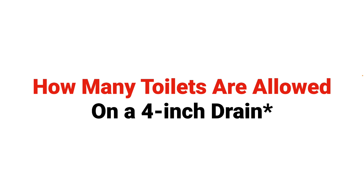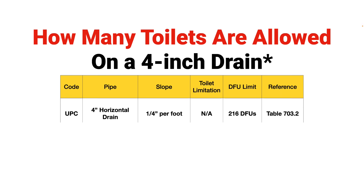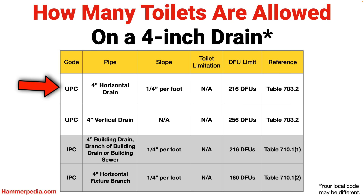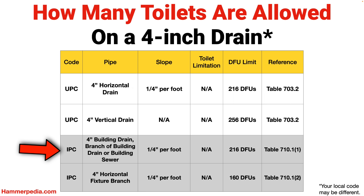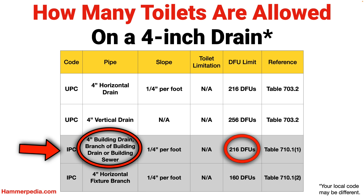What about four inches — how many toilets on a four inch drain? The UPC allows 216 DFUs on a four inch building drain sloped at a quarter inch per foot. The IPC also allows 216 DFUs, again assuming the pipe is a building drain, a branch of the building drain, or the building sewer.